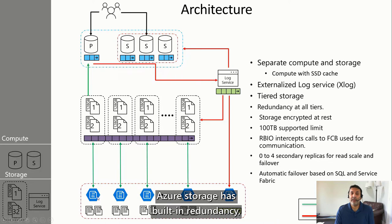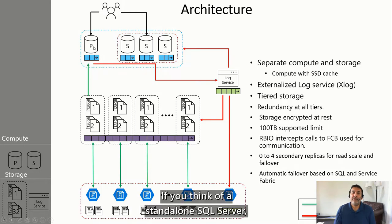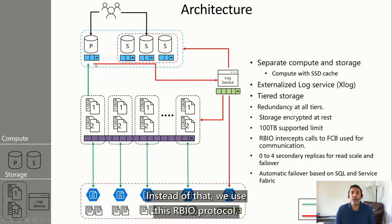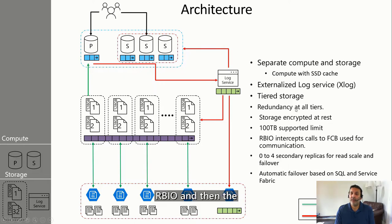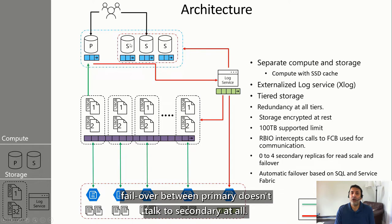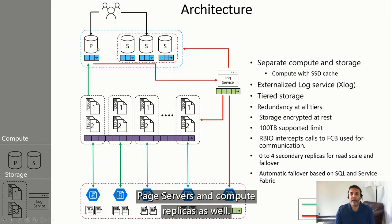The log service is also responsible for sending all these changes to one to four read replicas that you can configure. There is redundancy at all tiers — page servers have redundancy, Azure Storage has built-in redundancy, whether it's RA-GRS for cross-region restore. All the actual communications happen via RBIO. On a standalone SQL Server, when we do a write it's an OS write file call — instead of that, we use this RBIO protocol which intercepts that IO and sends it to the log service. Failover between primary and secondary uses Service Fabric applications, which takes care of availability of page servers and compute replicas as well.